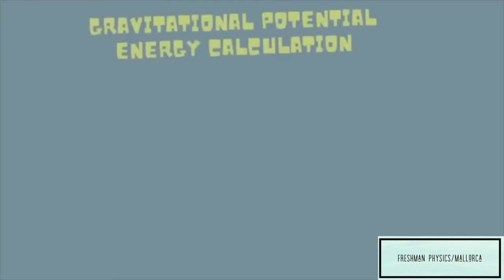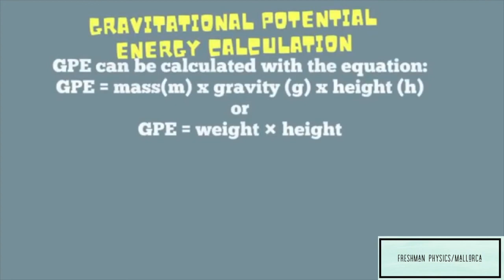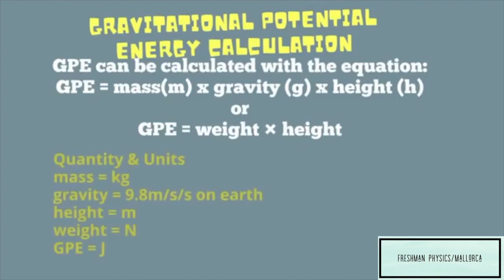Now let's learn how to calculate gravitational potential energy. Gravitational potential energy (GPE) can be calculated with the equation: GPE = mass × gravity × height, or GPE = weight × height, since weight comes from mass times gravity. The units to note: mass is in kilograms, gravity is the constant 9.8 m/s² on Earth, height is in meters, weight is in newtons, and GPE will always be in joules.